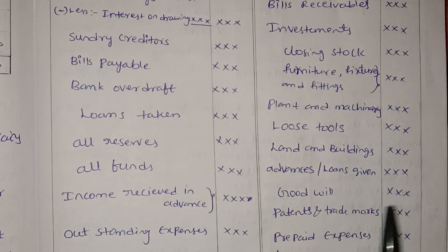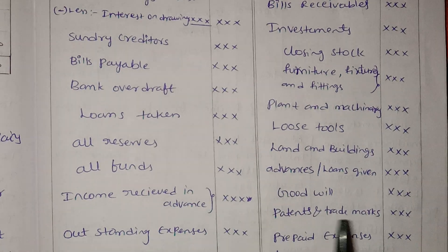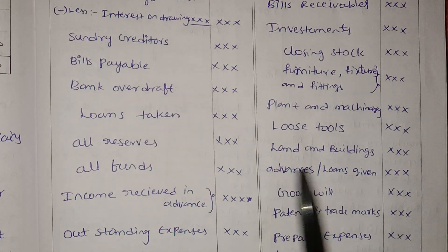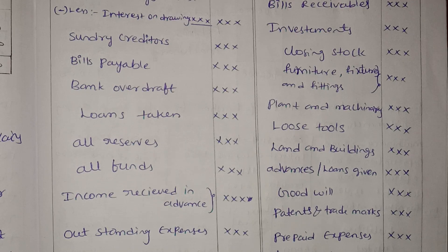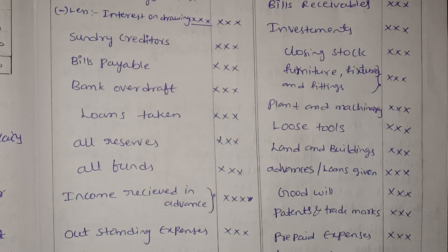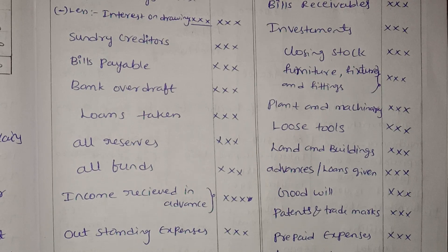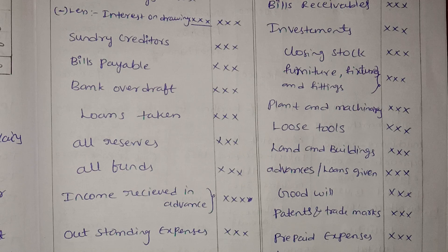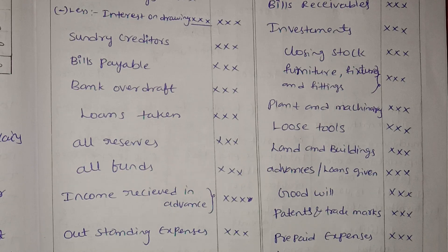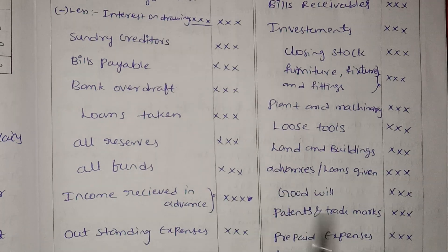Goodwill is an asset. Patents and trademarks are also assets — these are intangible fixed assets. Goodwill, for example, can have a value lasting up to 20 years.